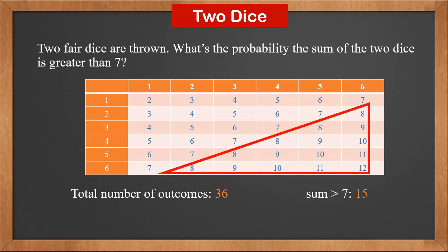And we can count the number of outcomes when the sum is greater than 7. This is 15. Therefore, the probability of the sum greater than 7 is 15 over 36, which is 5 over 12.